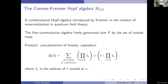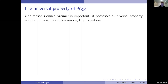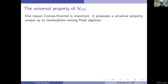The split happens at the vertices of an anti-chain. The relevant property here is the universal property of Connes-Kreimer, which is one of the reasons why Connes-Kreimer is important in certain contexts. It is the only Hopf algebra up to isomorphism with this property.